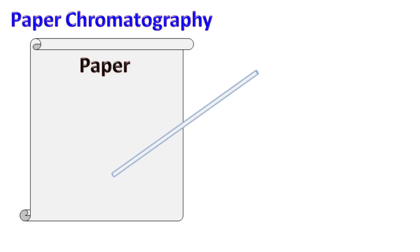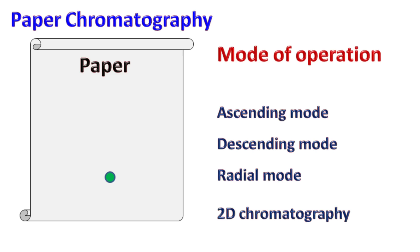The sample is applied on paper using a capillary. Once the sample is applied, the chromatography can be carried out in different modes. The modes of operation include ascending mode, descending mode, radial mode, and two-dimensional mode.